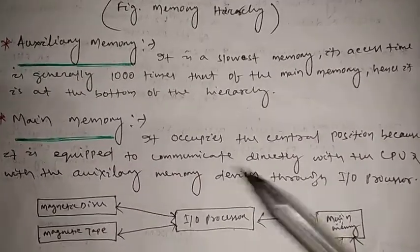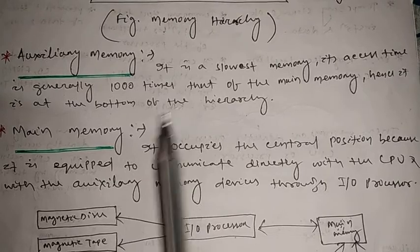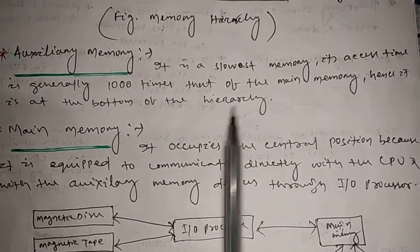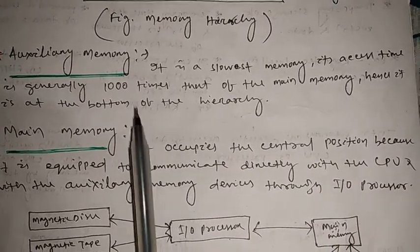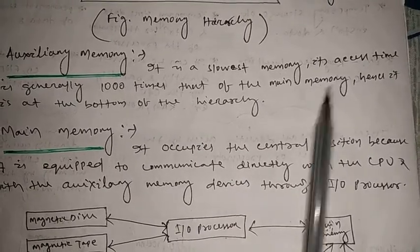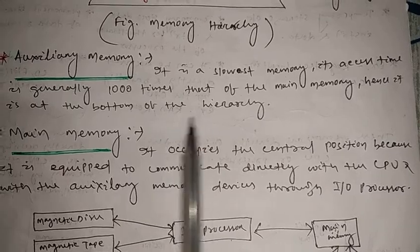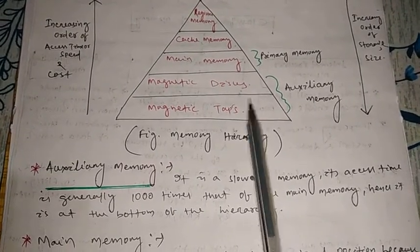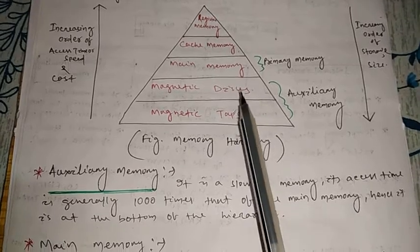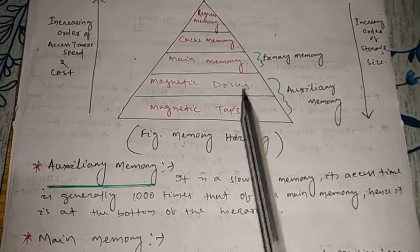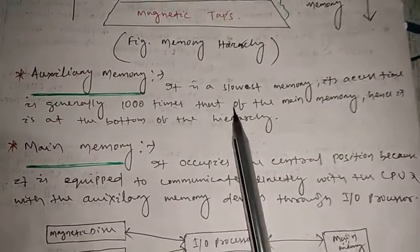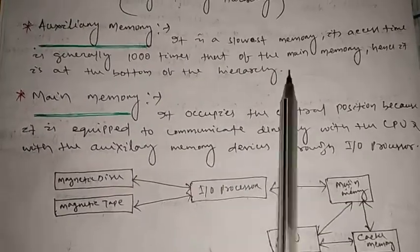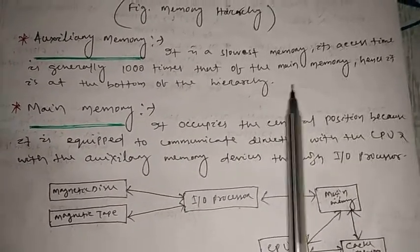Next, auxiliary memory. Auxiliary memory is the slowest memory. Its accessing time is generally one thousand times that of main memory. Hence, it is at the bottom of the memory hierarchy. Its size is huge compared to other memories, but its execution speed is one thousand times less than main memory.